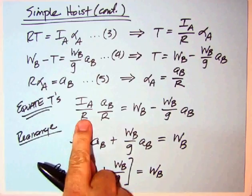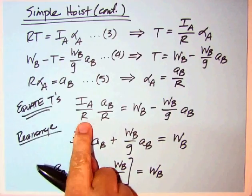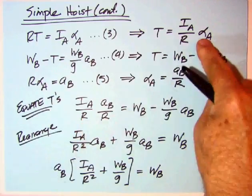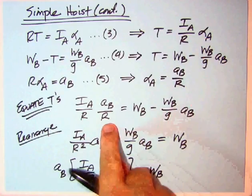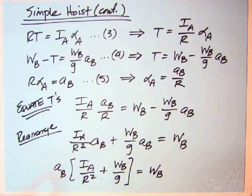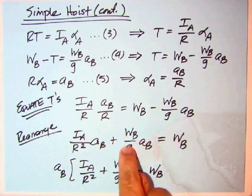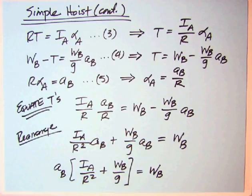Equating the T's, we've got the IA over R. Bringing down the definition for alpha A is AB over R here, so we end up with an IA over R squared term times AB. We've got an AB term over here that we can bring to the left. After a little more algebra, we get AB times these two terms.